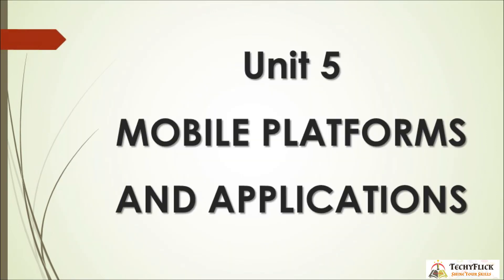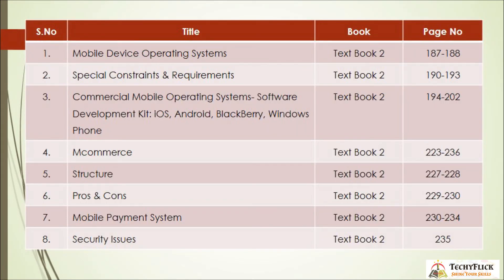Unit 5: Mobile Platforms and Applications — 8 topics total. First: Mobile Device OS — Textbook 2 pages 187 to 188. Second: Special Constraints and Requirements — Textbook 2 pages 190 to 193. Third: Commercial Mobile Operating Systems and Software Development Kits, including iOS, Android, Blackberry, and Windows Phone — Textbook 2 pages 194 to 202. Next: M-Commerce (mobile commerce) and E-Commerce — Textbook 2 pages 223 to 236. Advantages and disadvantages — pages 227 to 230. Mobile Payment System — pages 230 to 234. Security Issues — page 235.